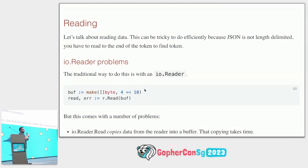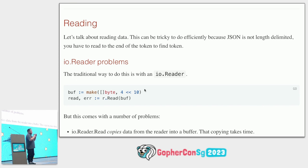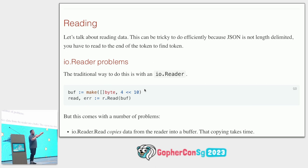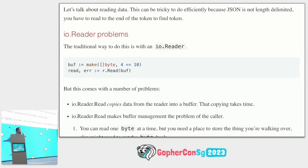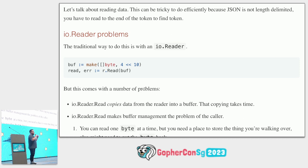I want to take a sidebar and talk about reading data efficiently. JSON isn't length-delimited, so to find the end of a token we have to read all characters until we find it — there's no way to skip ahead. As Go programmers, if we want to read data from an IO reader, we make a buffer, pass it to the reader, and it tells us how many bytes it copied into our buffer.